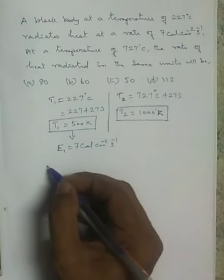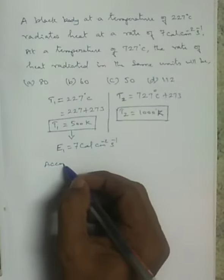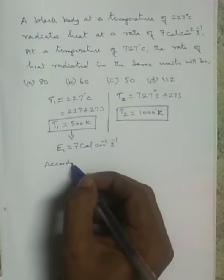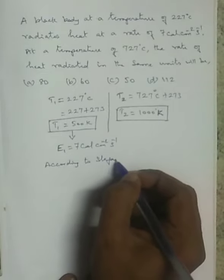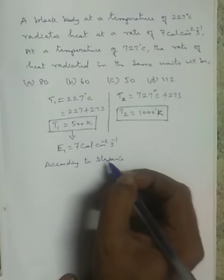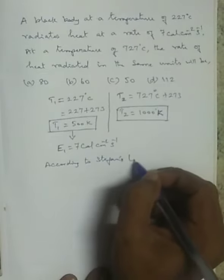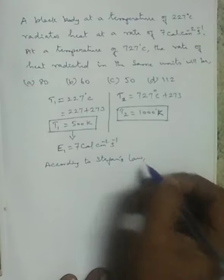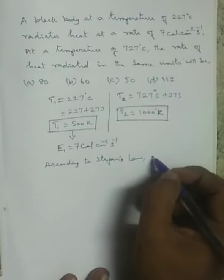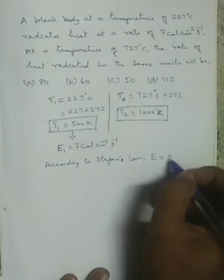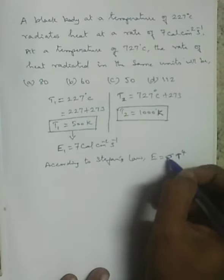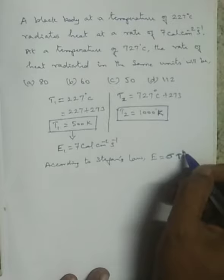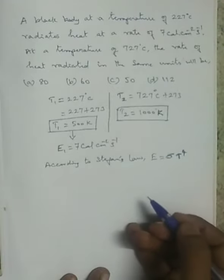According to Stefan's law, E is equal to sigma T to the power 4. So this is the formula.